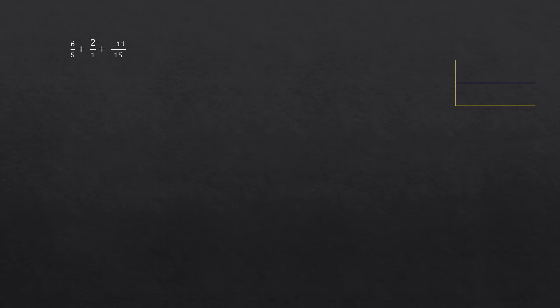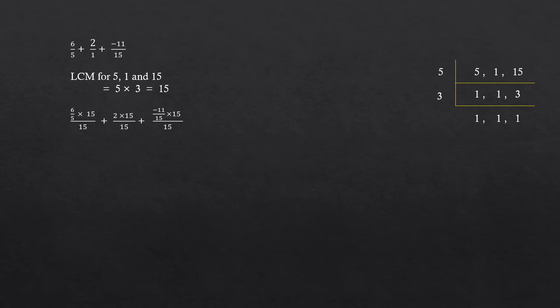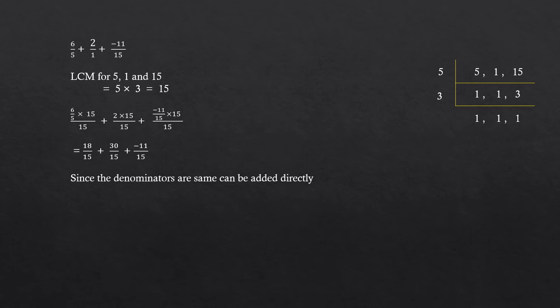Since denominators are different, we have to find the LCM of 5, 1 and 15, which is equal to 15. So we have to multiply and divide all the fractions with 15: 6 by 5 into 15 whole divided by 15 plus 2 into 15 whole divided by 15 plus minus 11 by 15 into 15 whole divided by 15, which is equal to 18 by 15 plus 30 by 15 plus minus 11 by 15. Now denominators are same, so we can add the numerator keeping the denominator: 18 plus 30 plus minus 11 whole divided by 15, which is equal to 37 by 15.